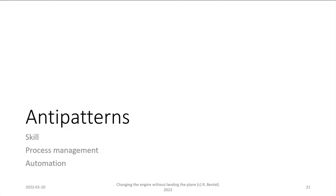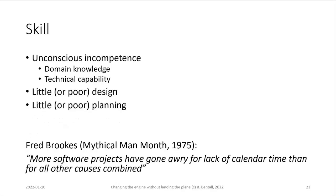What are the common anti-patterns? I've grouped them into three categories: skills, processes, and automation. Most of these are going to be related to human factors, not technical factors. And the technical factors aren't the sexy ones — after all, who wants to spend time sorting out an aging build system? These three elements often occur together.